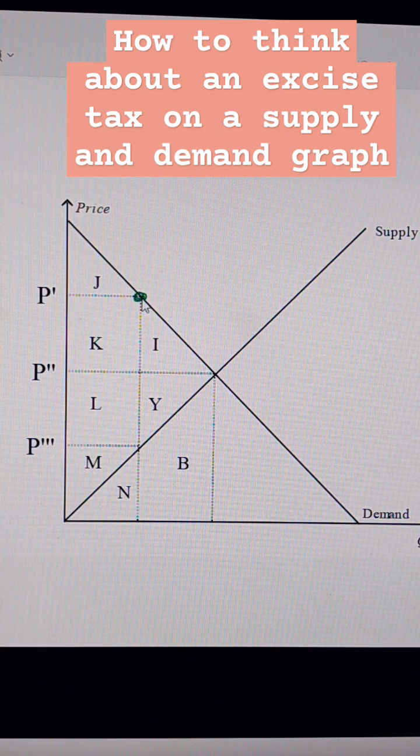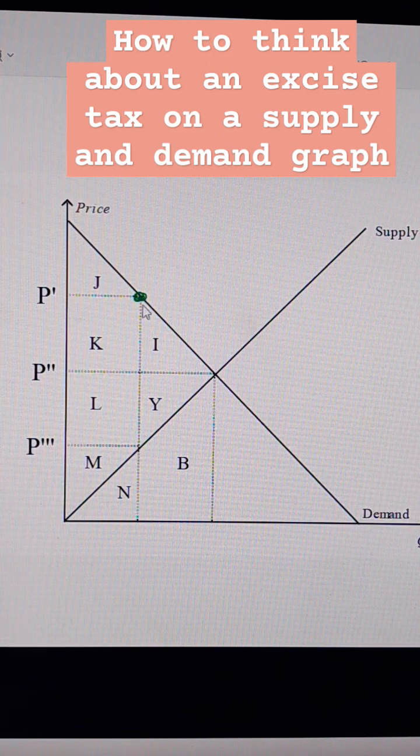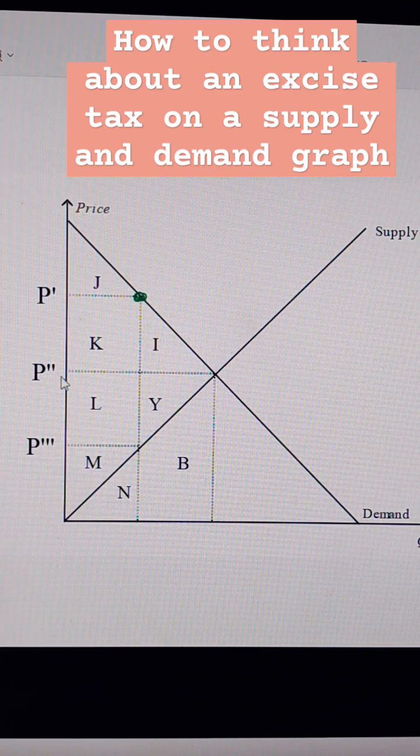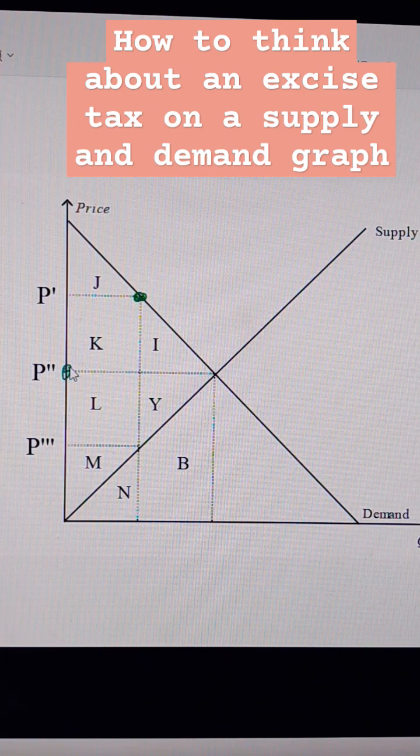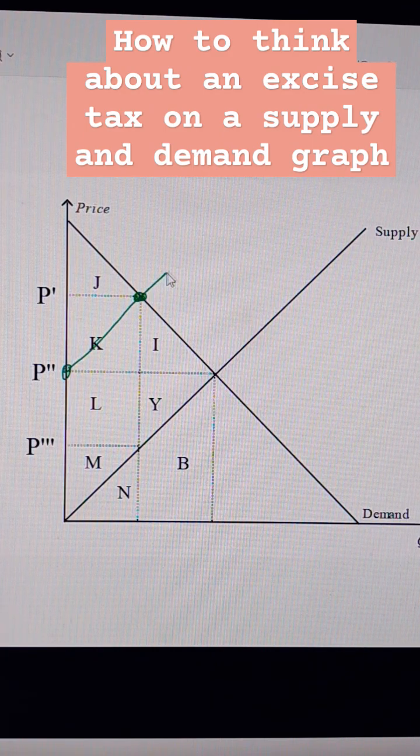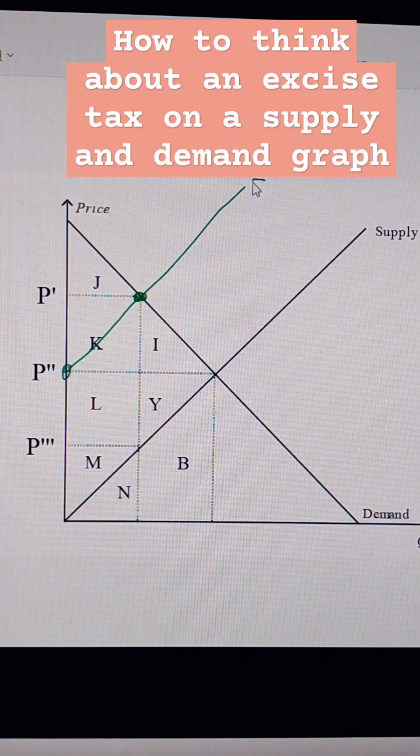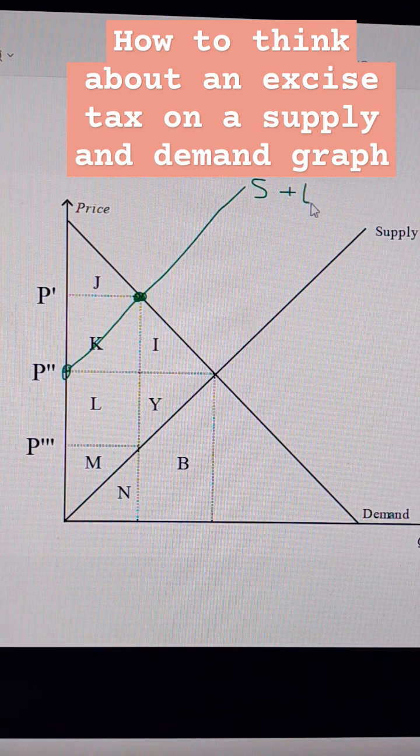What you want to do is recognize that the distance here to here would be the tax, also the distance between here and here. We're going to draw a line right here. This becomes S plus tax.